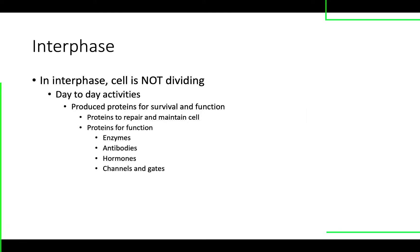Interphase is the cell's normal, everyday period of its life. The cell is going to make proteins — that's basically what it does. It makes proteins to help it repair itself, because a lot of the things inside the cell are made of proteins. It's also going to produce proteins that are used if it's a specialized cell. Most cells produce enzymes, which help to run the cell and keep it going.